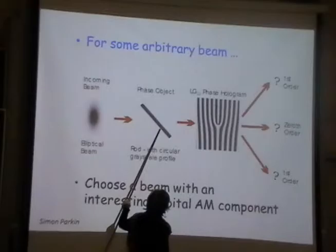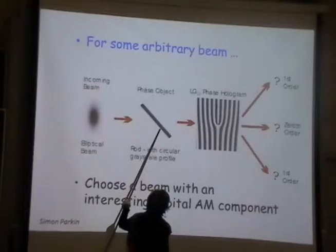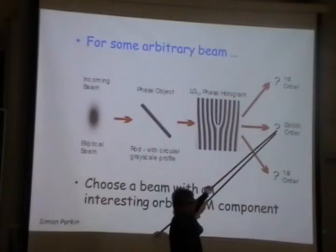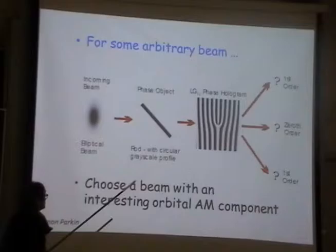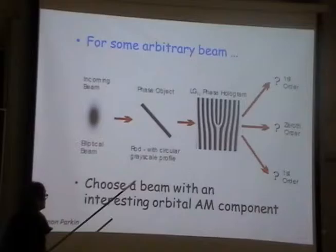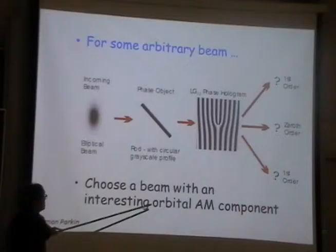In the transmitted light, I should get the incoming light after the phase object in zero order, and to the side, whatever other modes are present in the light transmitted through this object. This is the general case — let us choose a beam with an interesting orbital angular momentum component to make it easy.